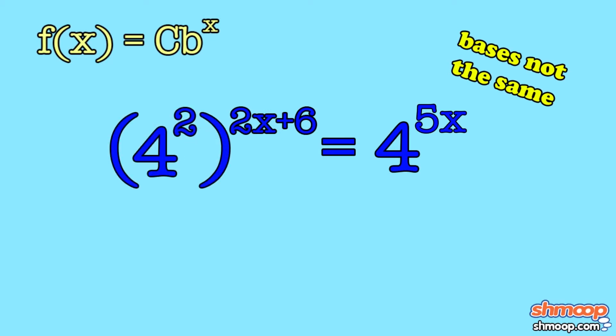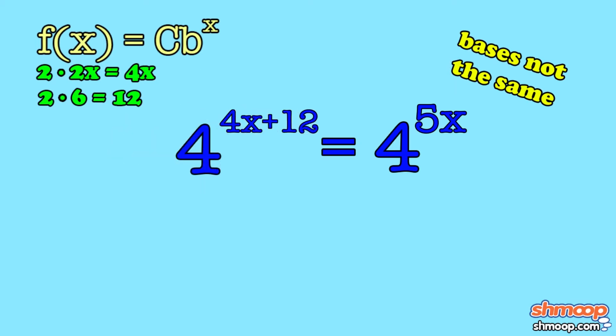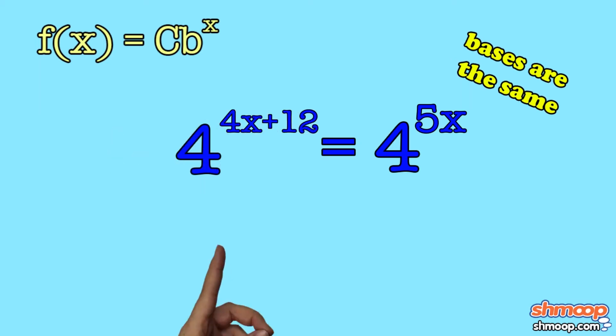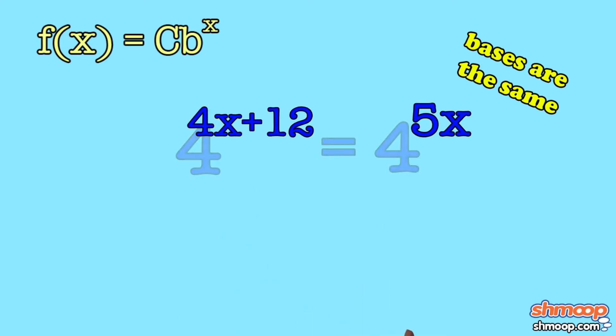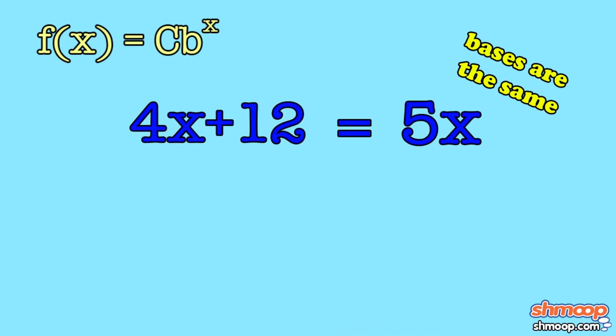we can write 16 as 4 squared. Then just take that 2 exponent and distribute it through the original exponent, which gives us 4 to the power of 4x plus 12. Now both sides have 4 for a base, so 4x plus 12 equals 5x.